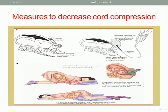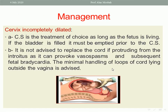In this picture, this is the method to decrease cord compression by positioning and pushing the presenting part away from the cord by filling the bladder with 500 millilitres of saline. If the cervix is incompletely dilated, caesarean section is the treatment of choice and should be done as an emergency.